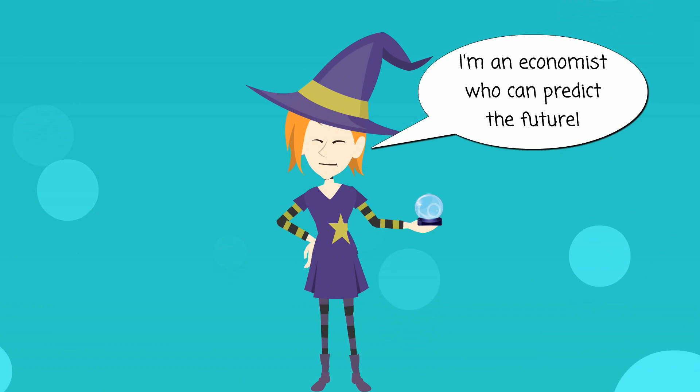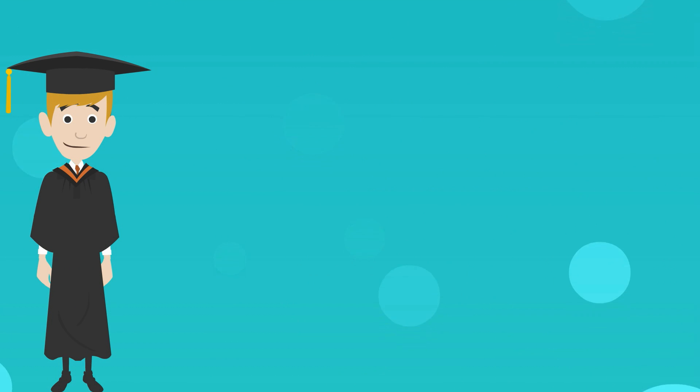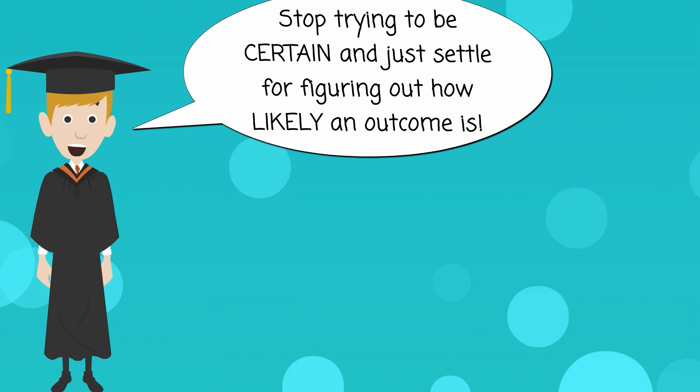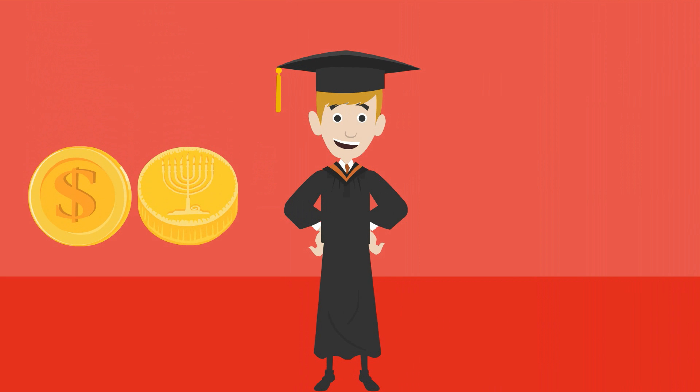Nobody can predict the future accurately and consistently. Instead of always trying to be certain, you're better off simply analyzing probabilities, which tell you how likely something is to happen. When tossing a coin, there are two possible outcomes: heads